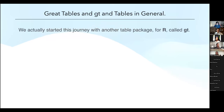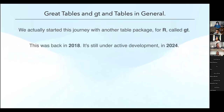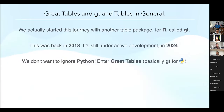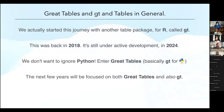Let's talk about Great Tables in context with another package called GT. I worked on that for a long time and still do. We started this whole journey way back with a table package for R called GT, back in 2018, and it's still under active development in 2024. We don't ignore Python — it's important in data science — so enter Great Tables, basically GT for Python. There's an initiative at Posit to do more Python, and over the next few years we'll be focused on both Great Tables and GT.